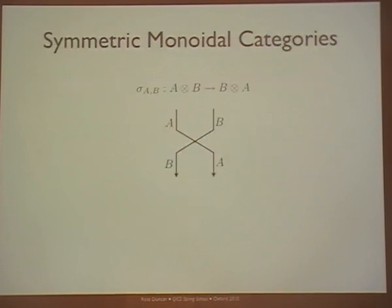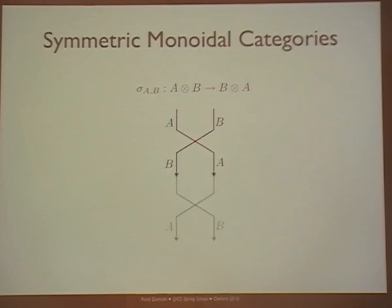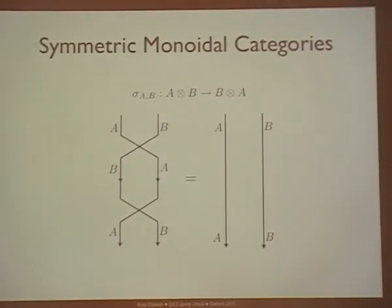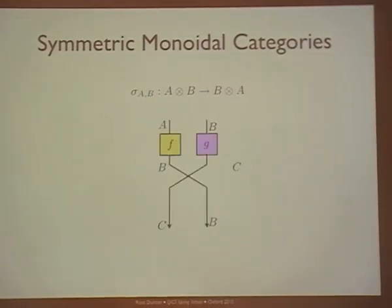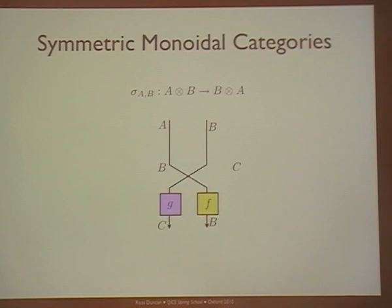The scalars always form a commutative monoid, and you can multiply arrows by scalars. I'm also going to add a symmetric monoidal structure: lines can cross, and I don't care about over or under — if I cross and cross again, that gives the identity. I can slide boxes over crossings and it doesn't matter, so you can think of the lines as infinitely stretchable. That's a symmetric monoidal category.